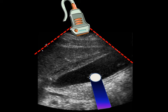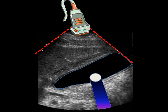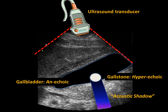The gallstone is within the sonolucent — or echolucent, or anechoic — gallbladder, which is fluid-filled. Labeled on this image is the ultrasound transducer, the anechoic gallbladder, the hyperechoic gallstone, and the acoustic shadow.